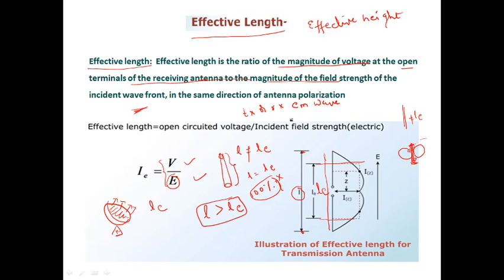So these are the three parameters we discussed in today's class: beam width, radiation intensity, and effective length. Thanks for watching this video.